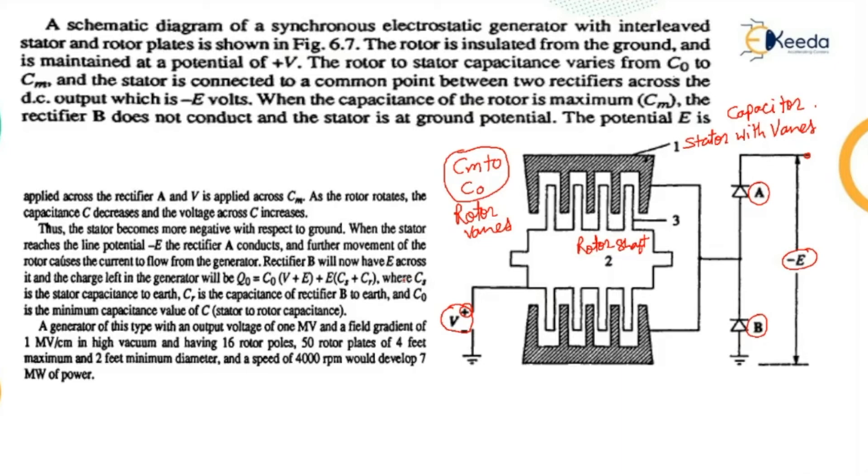The DC output voltage is minus E volts. When the capacitance of the rotor is maximum Cm, the rectifier B doesn't conduct and the stator is at ground potential. The potential E is applied across rectifier A and V is applied across Cm. As the rotor rotates, the capacitance C decreases and the voltage across C increases.